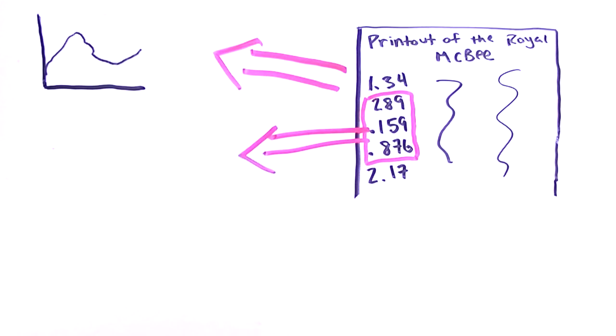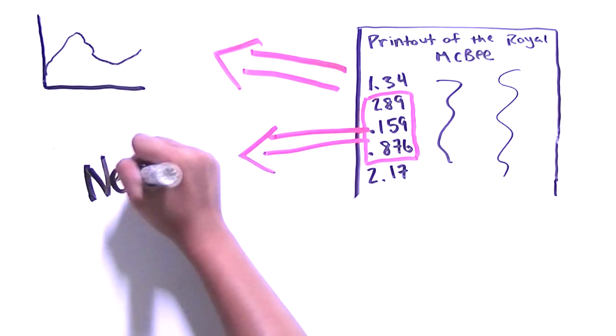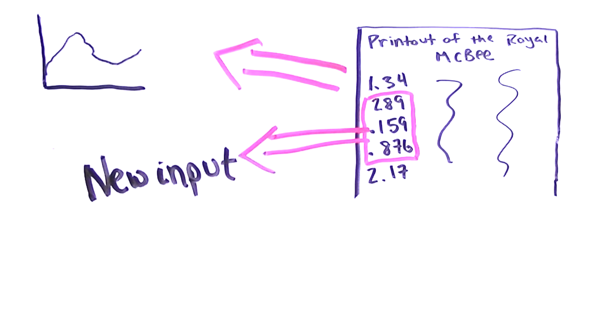One day, Lorenz decided to input new initial conditions based on calculations he received about midway through his previous initial conditions.